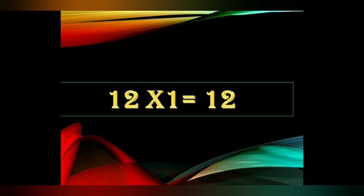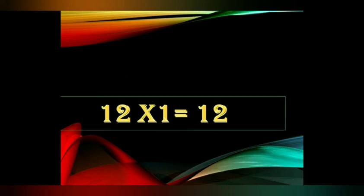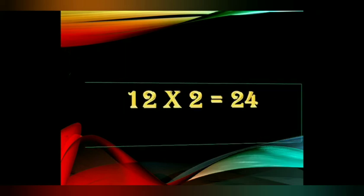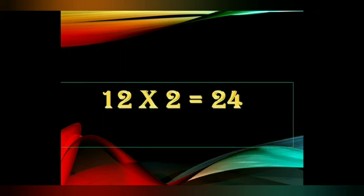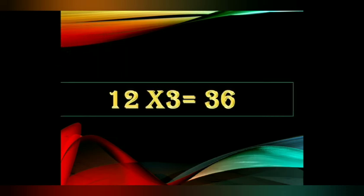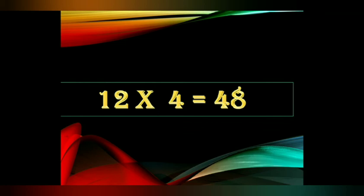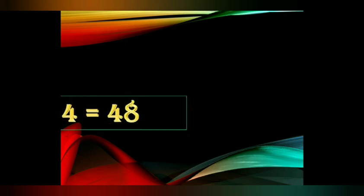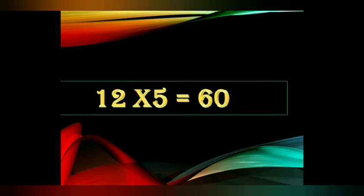Twelve ones are twelve. Twelve twos are twenty-four. Twelve threes are thirty-six. Twelve fours are forty-eight. Twelve fives are sixty.